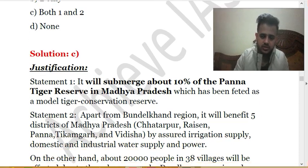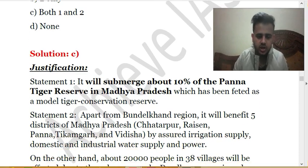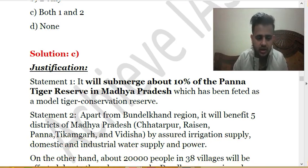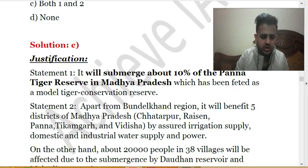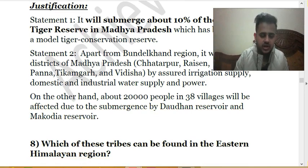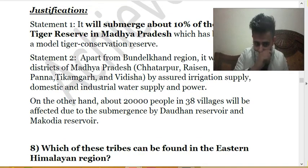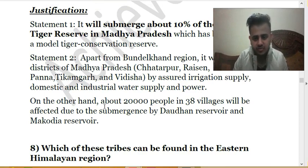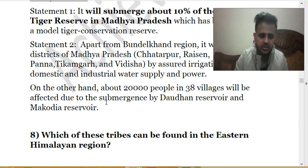The Ken-Betwa project will supply irrigation to the dry regions of Bundelkhand and other districts of Madhya Pradesh like Chhatarpur, Ashoknagar, Raisen, Panna, Tikamgarh, and Vidisha, providing assured irrigation, domestic, and industrial water supply. However, nearly 20,000 people across 38 villages will be affected by this interlinking project.